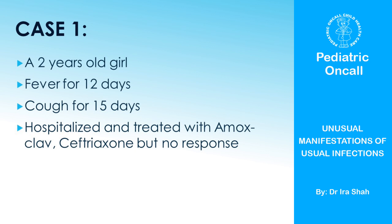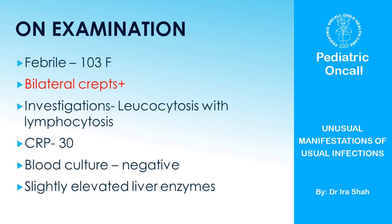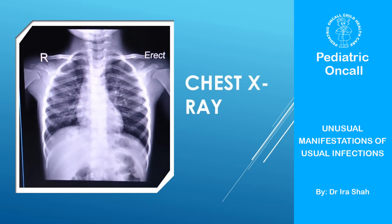This is a two-year-old girl. She had fever for 12 days and cough for 15 days. She's been hospitalized for pneumonia, treated with amoxiclav and ceftriaxone, but there has been no response. On examination, she has a fever of 103, bilateral crepts, leukocytosis with lymphocytosis. The CRP is 30, blood culture is negative, and she has slightly elevated liver enzymes. And this is her X-ray.